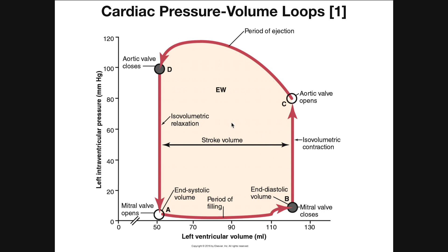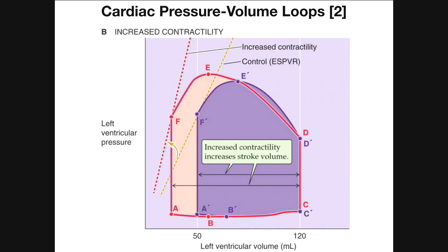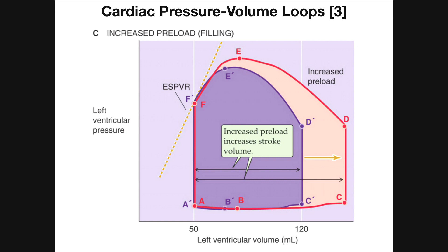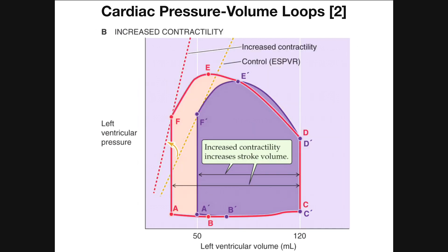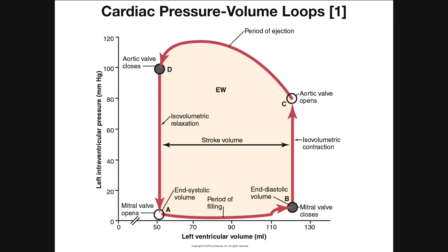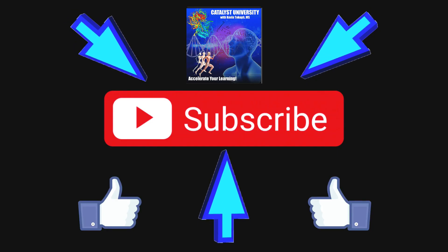Hopefully this pressure volume loop made sense. In the next video we're going to go over variations of this and see how different factors like increased preload, contractility, and increasing afterload affect the shape of the pressure volume loop. Please make sure to like this video and subscribe to my channel for future videos and notifications.